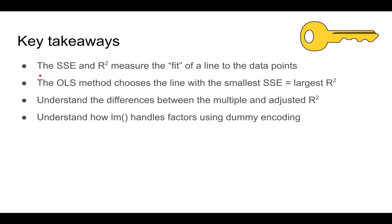The key takeaways from this lecture are that the sum of square errors and the coefficient of determination, the r squared, help us to measure the fit of a line to the observed data points. The ordinary least squares method chooses the line with the best fit defined as the smallest SSE or the largest r squared. I mentioned the difference between the multiple versus the adjusted r squared. This one always increases when you add new variables, but this one only increases when you add the good variables. And finally, I mentioned how the linear regression in R handles factors using dummy encoding.